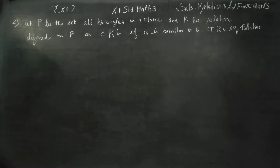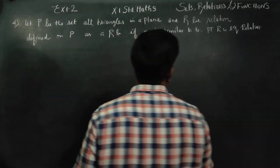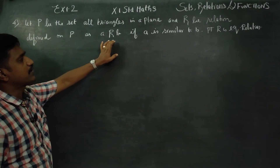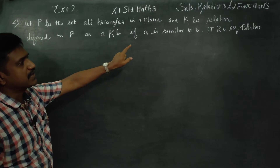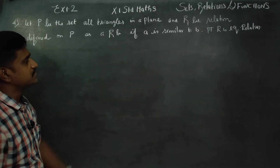Hello 11th standard students. In exercise number 1.2, sets of relations and functions, sum number 4: Let P be the set of all triangles in a plane and R be a relation defined on P as A is related to B if A is similar to B. Prove that R is an equivalence relation.